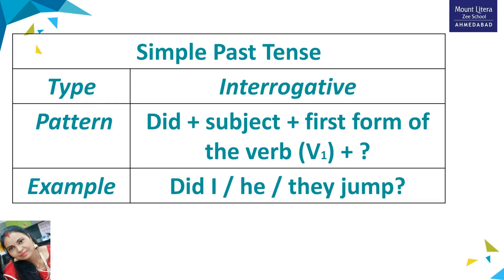For making interrogative sentences, the pattern is: 'did' plus subject plus first form of the verb and a question mark. For example, 'Did I / he / they jump?' First we use 'did,' then we add the subject, then we add the first form of the verb, and put a question mark at the end.